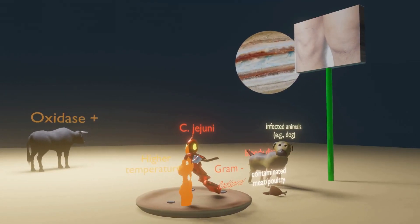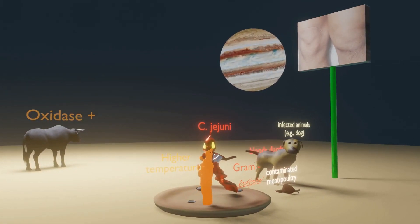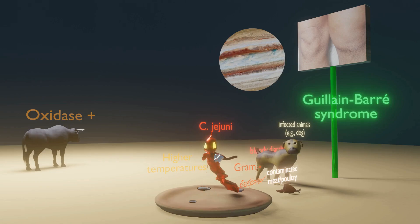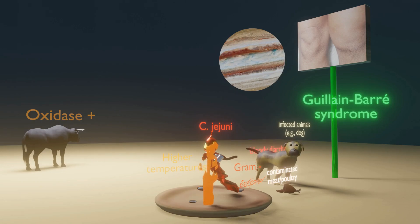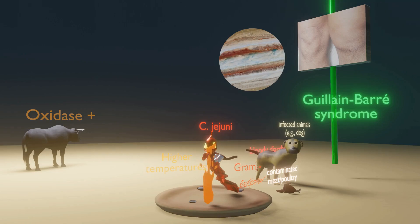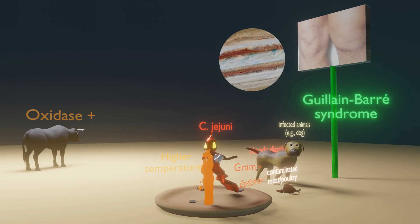Symptoms usually resolve within a week and patients generally just require supportive care. Two important associations to be aware of: Guillain-Barré syndrome, which happens in a minority of cases when a host response to Campylobacter infection generates cross-reacting antibodies to peripheral nerve myelin gangliosides — a form of molecular mimicry. The green bar here reminds us of Guillain-Barré, and the fact that it goes up reminds us of the ascending symmetric weakness found in Guillain-Barré syndrome.